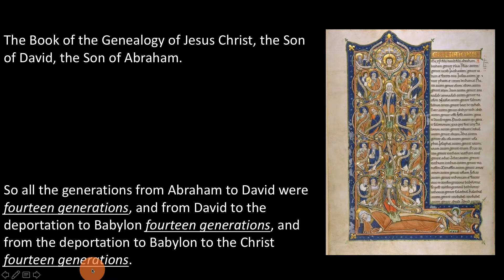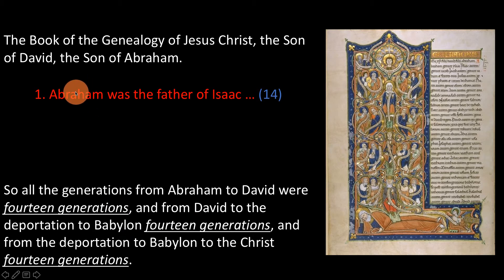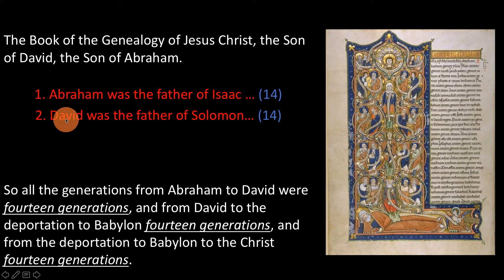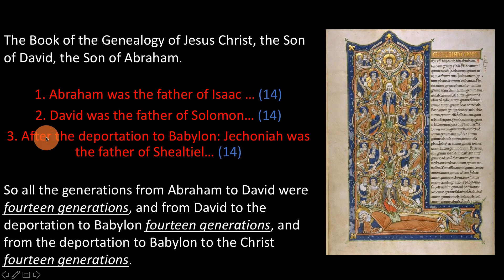So what's Matthew telling us? He's telling us that his genealogy is broken up into three columns. The first column starts with Abraham and goes all the way down to David and has 14 generations. The second column begins with David and goes down to the deportation to Babylon, likewise containing 14 generations. The third column begins with the deportation to Babylon and finishes with Christ, likewise 14 generations.